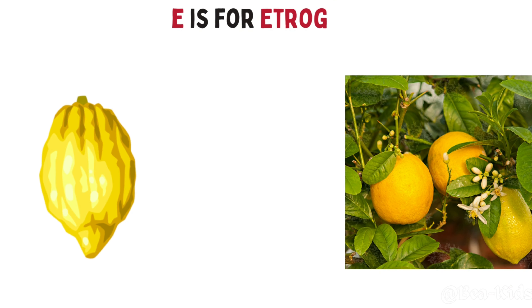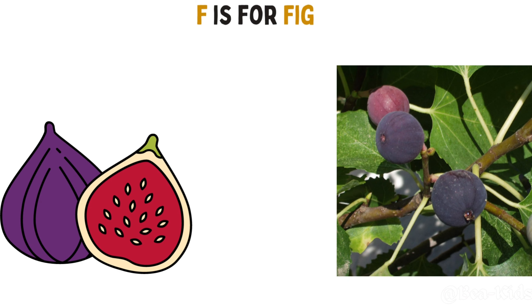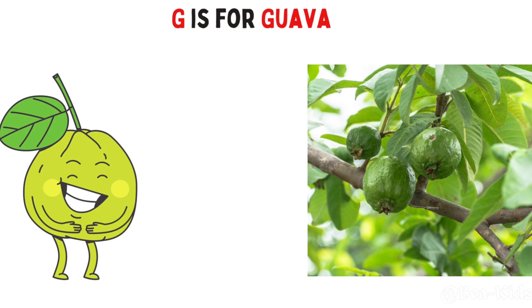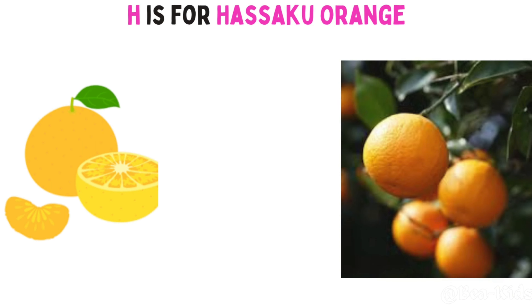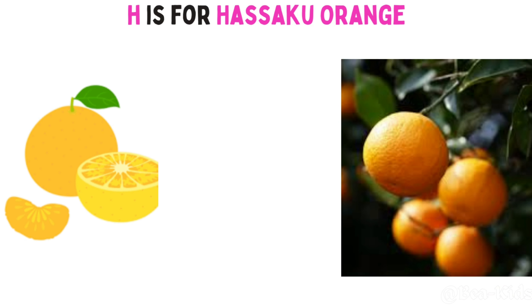E is for Etro. F is for Fig. G is for Guava. H is for Hasaku Orange.